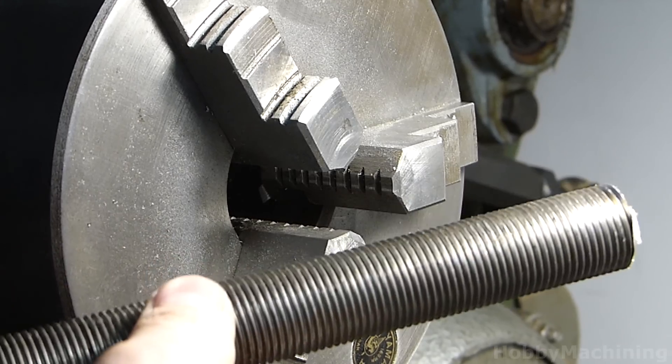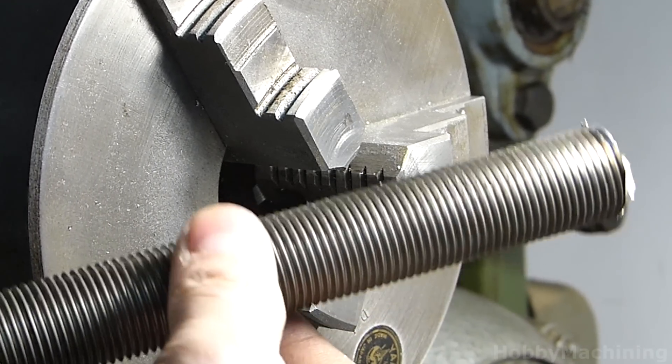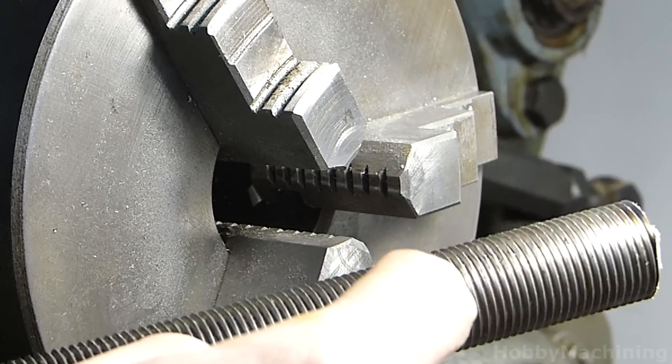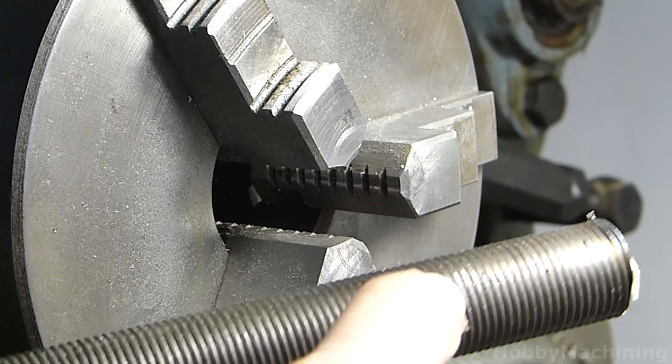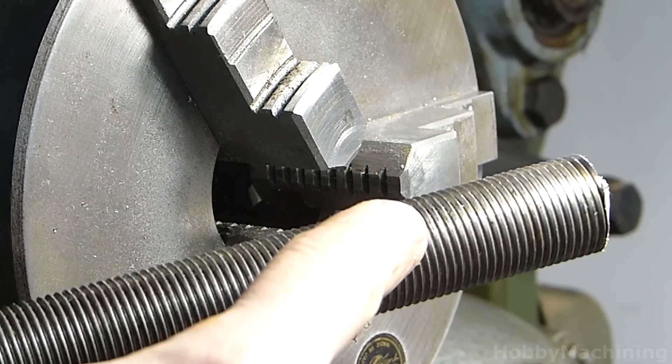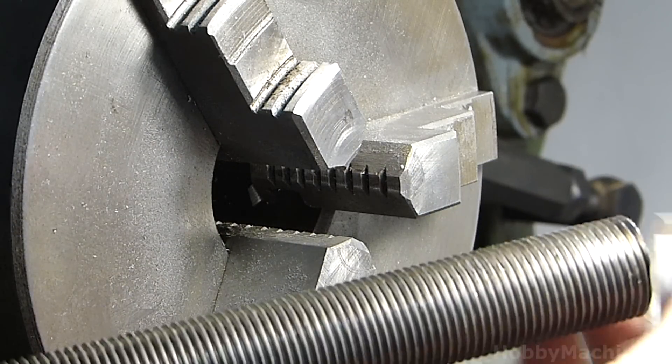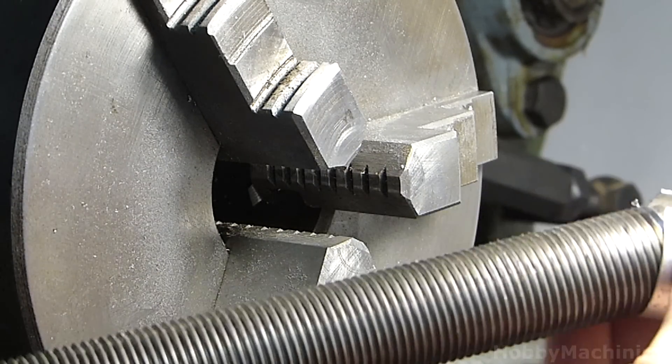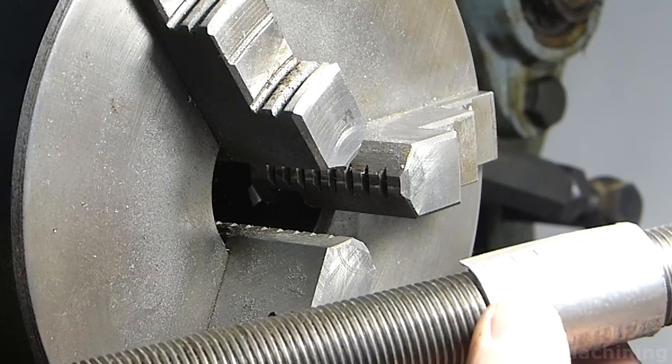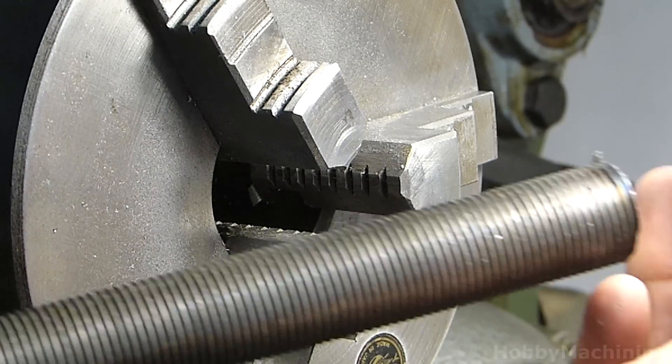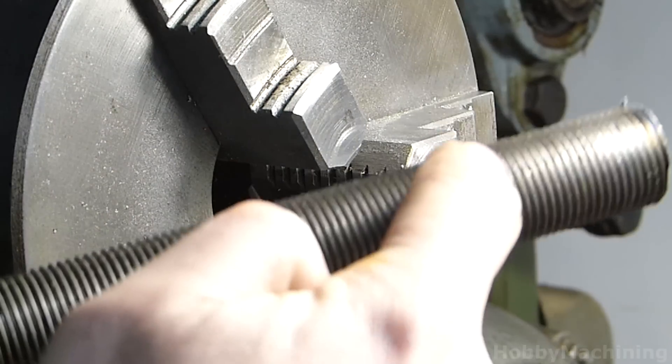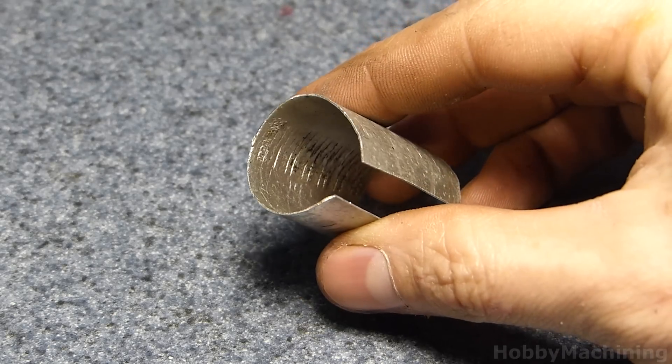Now, this threaded rod is another story. This is not hardened. It's very soft. You can see there's a ding in the threads right there already. My first time around, what I did is I actually just wrapped a piece of aluminum around the threads, like that, and I used that as a cushion between the jaws and the threads. This actually worked okay.